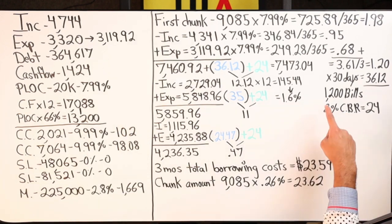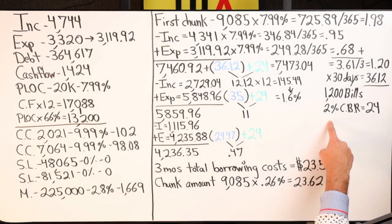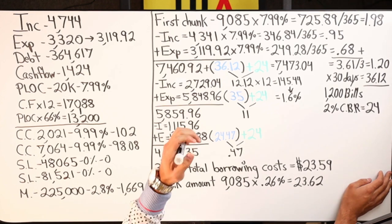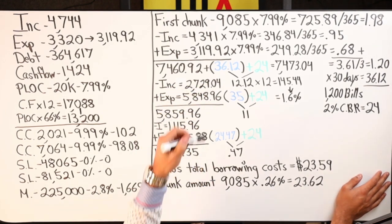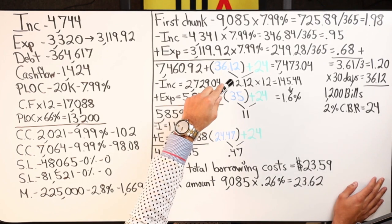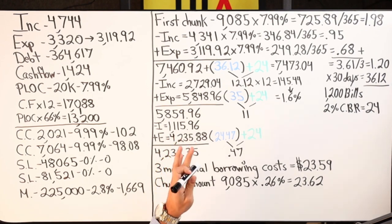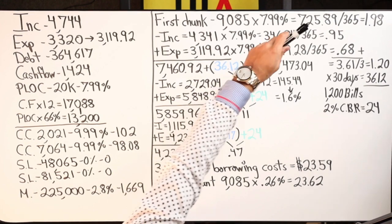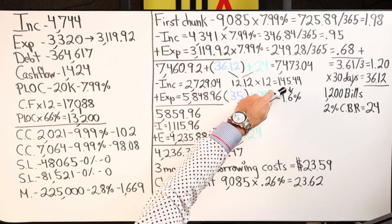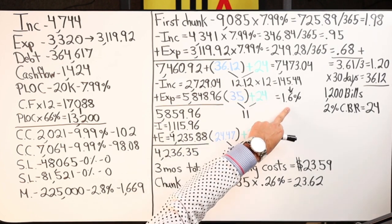Factor in your borrowing costs: take one dollar ninety-eight cents, ninety-five cents, and sixty-eight cents, add the three and divide by three — you get one dollar twenty cents a day, times thirty days equals thirty-six dollars and twelve cents for the month. Now, if you add a credit card into your velocity banking strategy and earn one to three percent — or up to five percent — cash back rewards on bills you already have, in this case I took twelve hundred dollars of bills, calculated two percent cash back — that's twenty-four dollars each month.